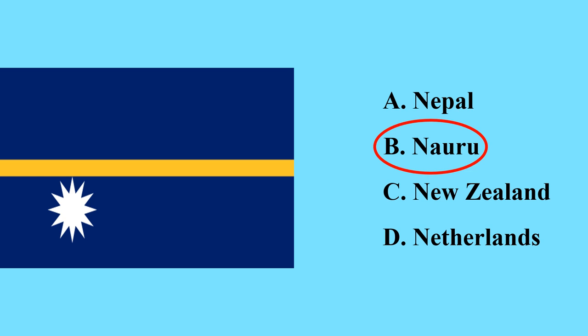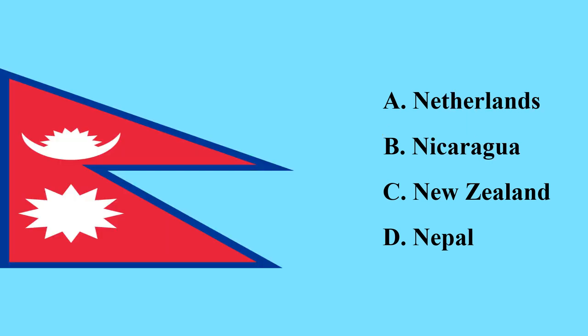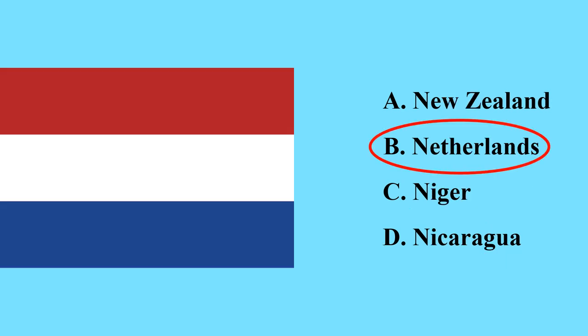This is the flag of Nauru, the smallest country in Oceania. This is the flag of Nepal — Nepal is a country in which the highest mountain is found, that is Mount Everest. This is the flag of the Netherlands.